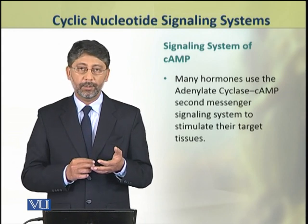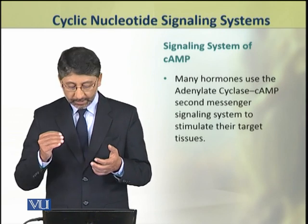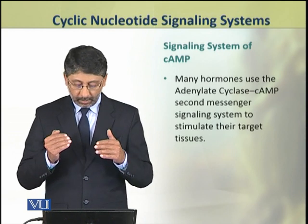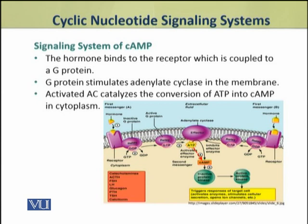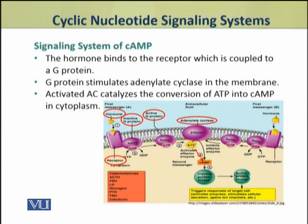Many hormones use the cAMP adenylate cyclase second messenger signaling system. This system is used to stimulate the target tissues. In this system, the hormone binds to the receptor. This receptor is coupled to a G-protein. Binding of the hormone to the receptor causes the activation of this G-protein. The activated G-protein stimulates the enzyme adenylate cyclase, which is present in the plasma membrane, and its activation catalyzes the conversion of ATP into cAMP. This step occurs in the cytoplasm.